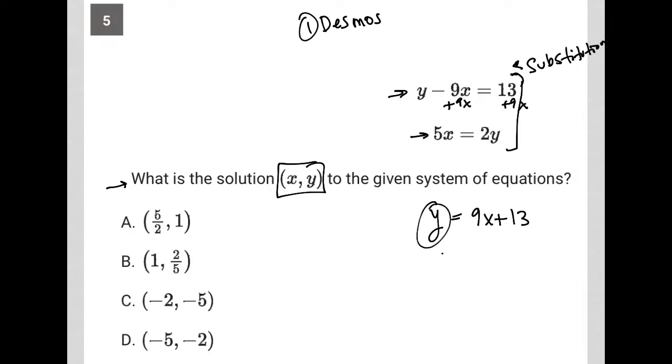I'm going to then take that y value and plug it into the y value of the second equation. So I have 5x equals 2 times, instead of y, I replace y with 9x plus 13.